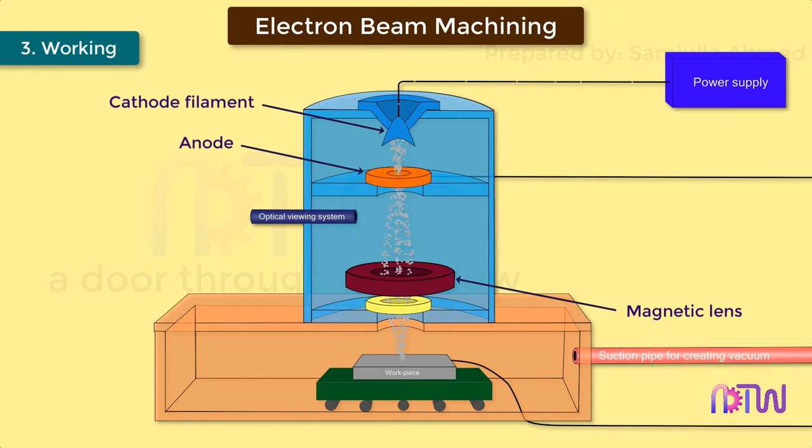Then this beam passes through the electromagnetic lens and deflecting coil, which focuses the high-energy electron beam onto the required spot of the workpiece surface. The high intense electron beam impinges on the workpiece, where kinetic energy of electrons convert into thermal energy. And the workpiece material is removed by this intense heat, thereby melting and vaporizing it. And this whole process is carried out in the vacuum chamber.